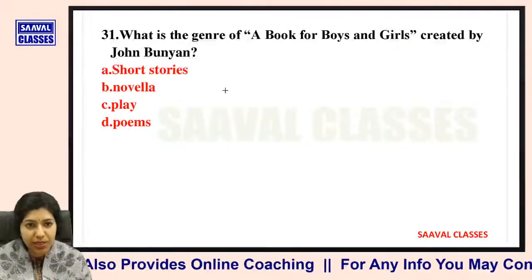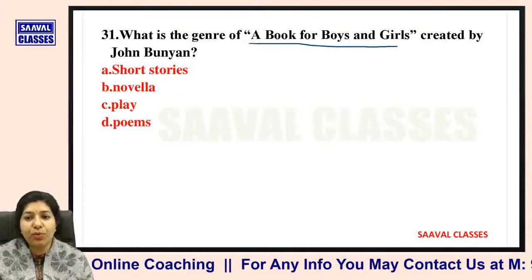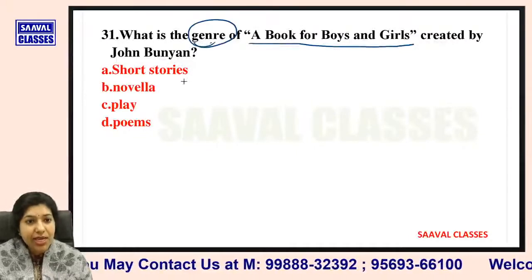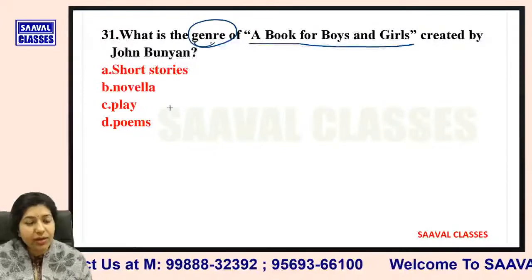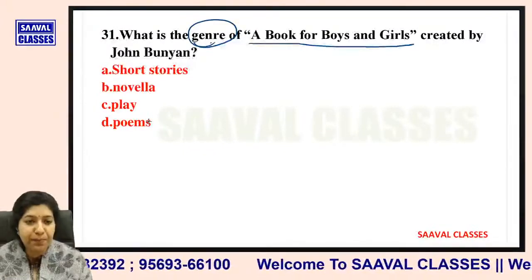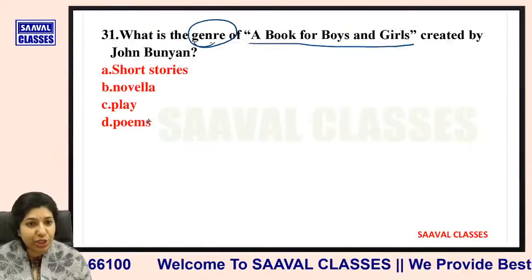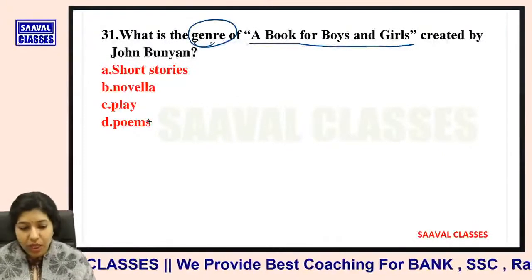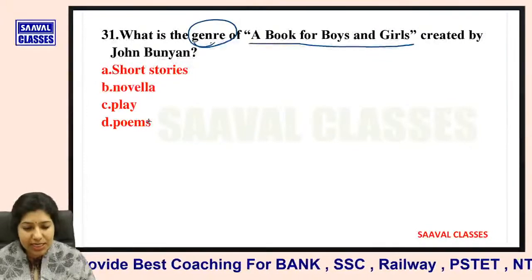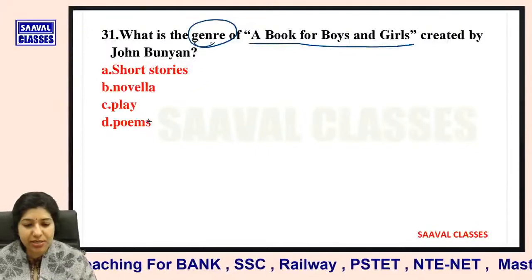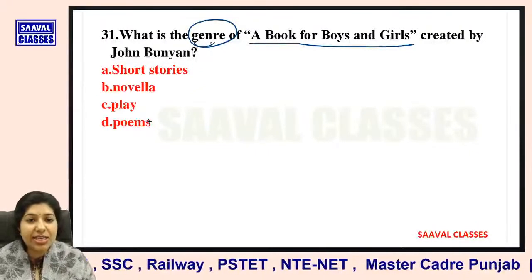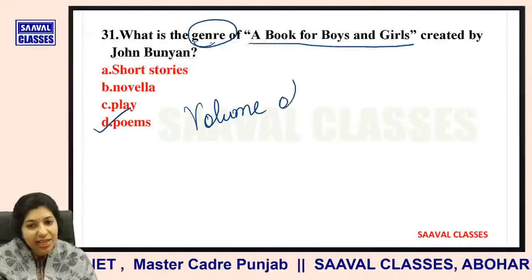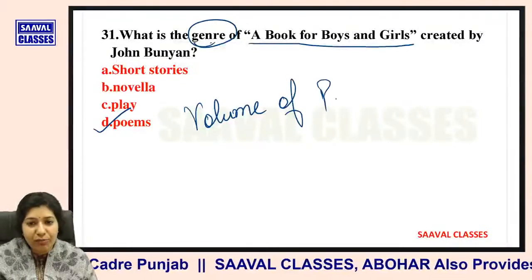Question number thirty-one: What is the genre of A Book for Boys and Girls created by John Bunyan? Short stories, novella, play, or poems? What does this book comprise of? It is a volume of poems.